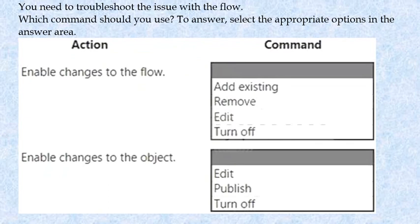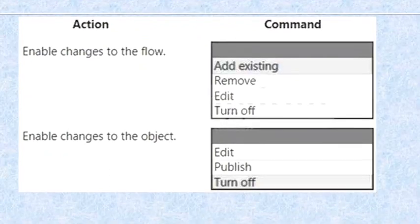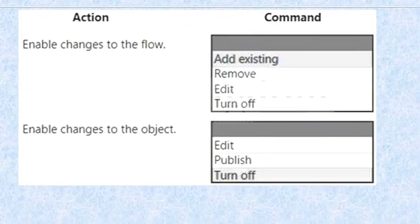The action is to enable changes to the object — the commands are: edit, publish, or turn off. The correct answer: to enable changes to the flow, the command should be 'edit existing'; and to enable changes to the object, the command should be 'turn off'.